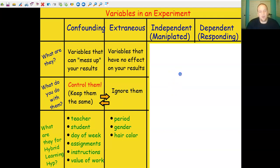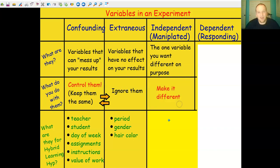In a real experiment, you only want two real variables or two things that may impact your results to vary in your experiment. The first one is what we call the independent variable. The independent variable is the one thing that we make different on purpose. It's the one thing that we want different between our two groups.